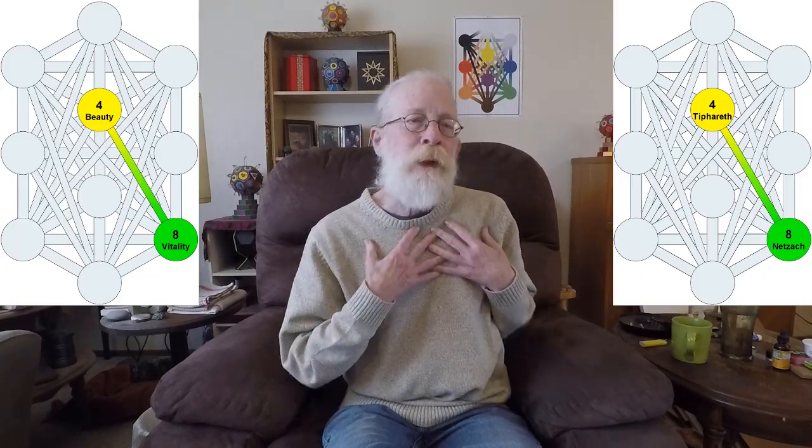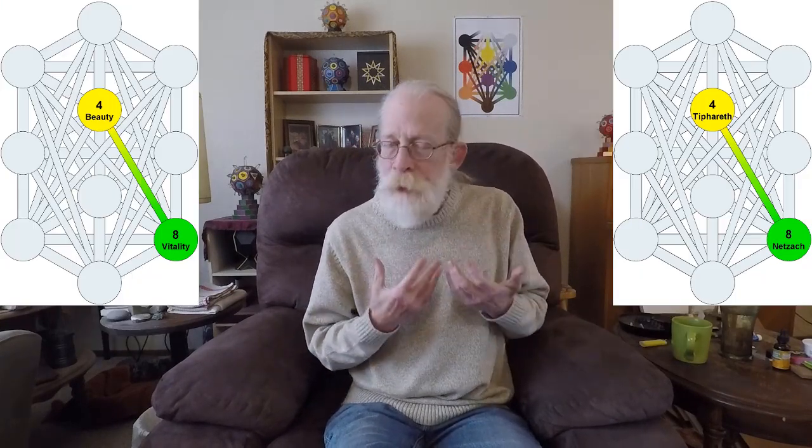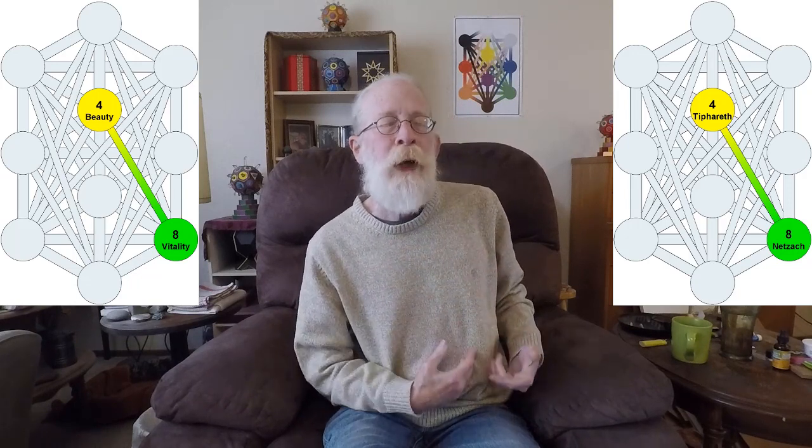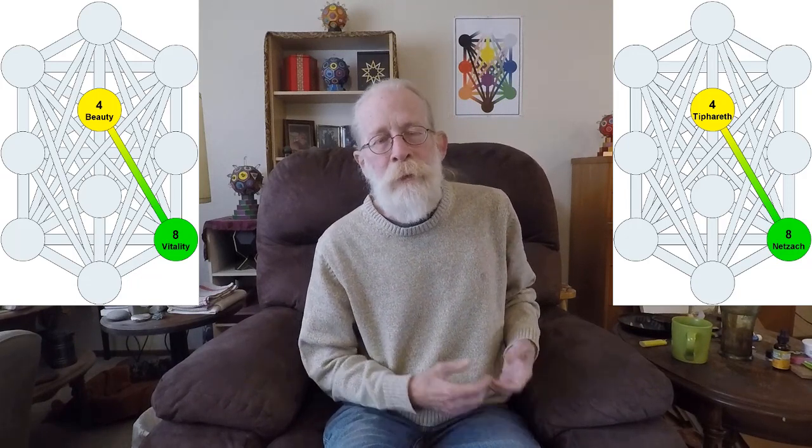So, the first gate, naturally, is just the linear gate. Start in Tiferet, descend down the hidden path into Netzach, and then return.